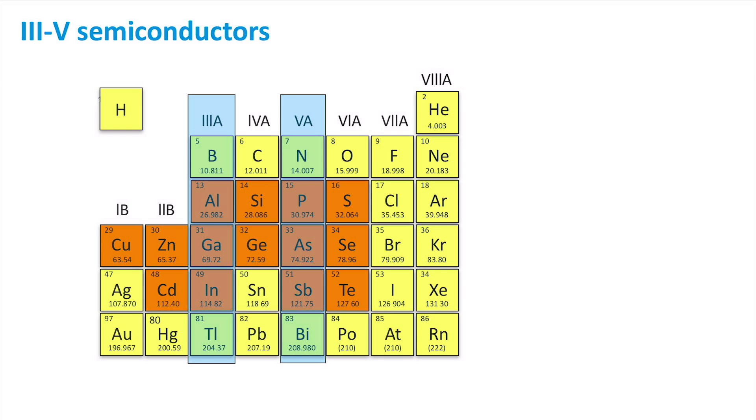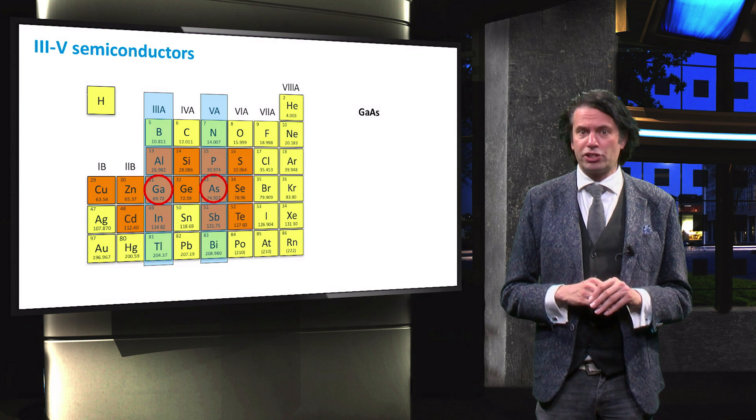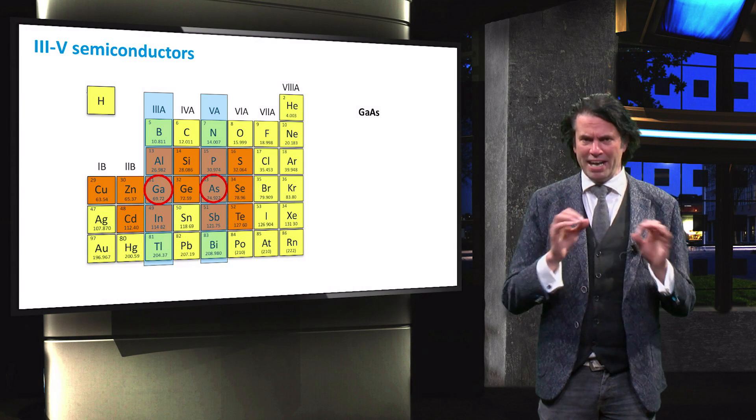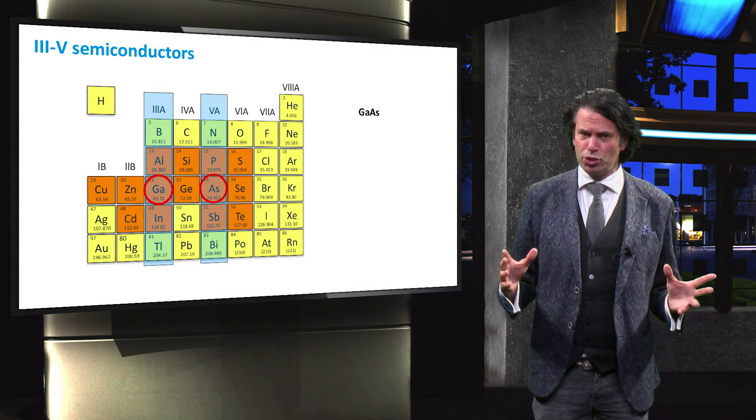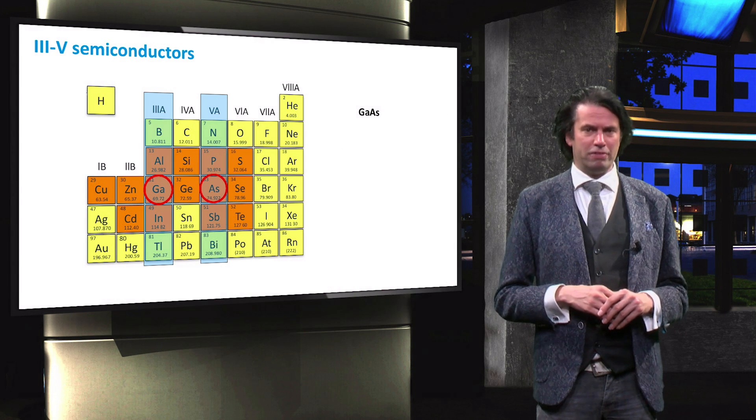One of the most common 3.5 absorber materials is formed by bonding the group 3 material gallium with the group 5 material arsenic. Several such combinations are possible, however, and many different 3.5 alloys are used as an absorber material by the PV industry.